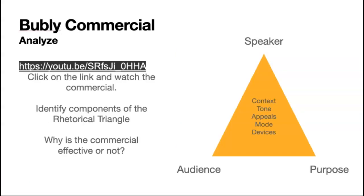What I want you to do now — we're going to have a little bit of fun. We're going to look at a light-hearted message as a way to get started with learning to analyze rhetoric. I have a commercial here — it's a Bubbly commercial, and some of you have probably seen it. As you're watching, I want you to think about the components of the rhetorical triangle: the speaker, the audience, the purpose, and maybe any of the things in the middle — devices, tone, context, mode — and think about whether or not the commercial is effective.